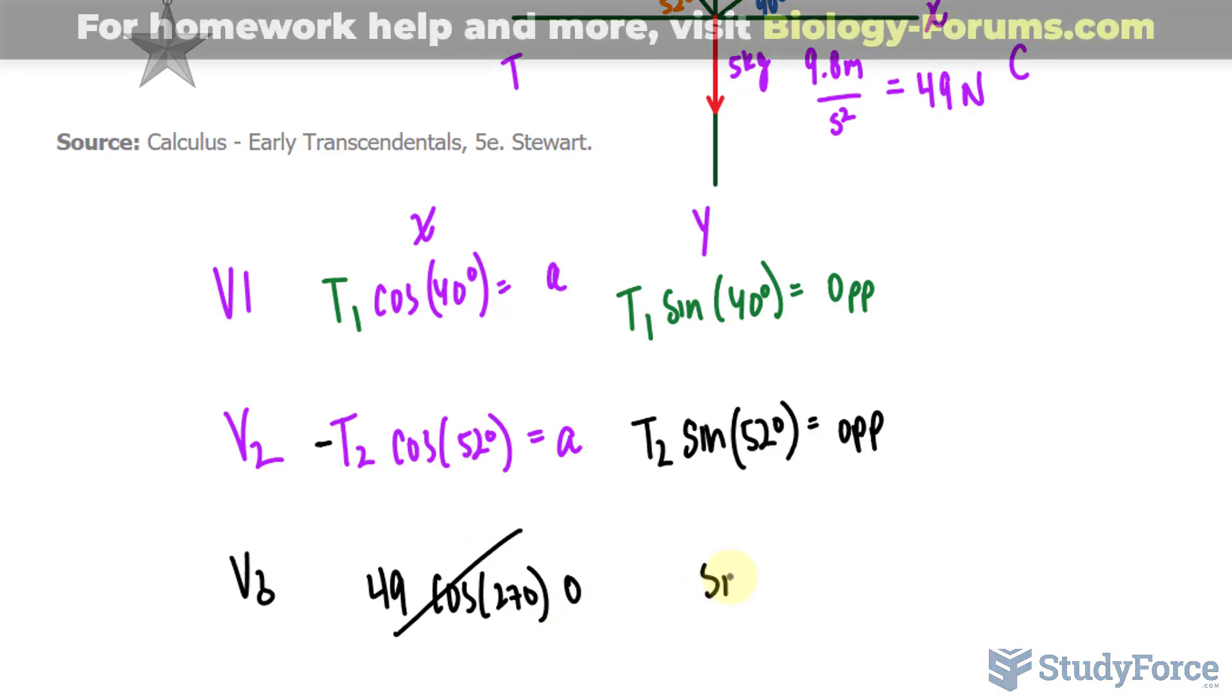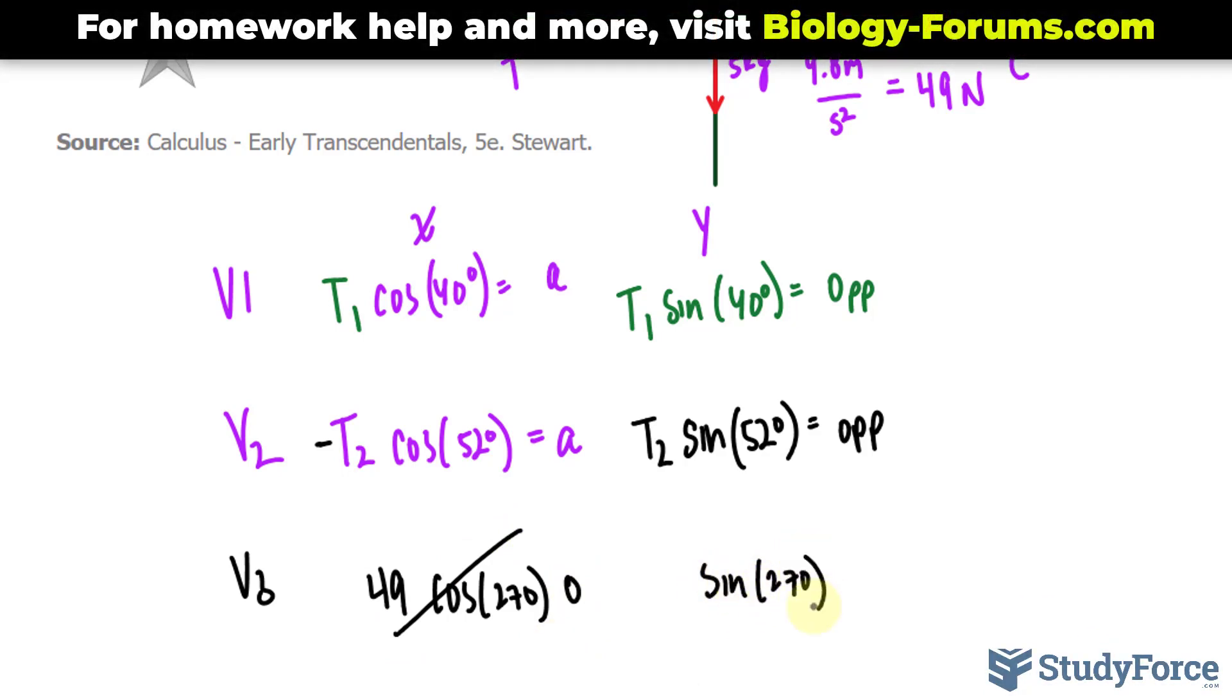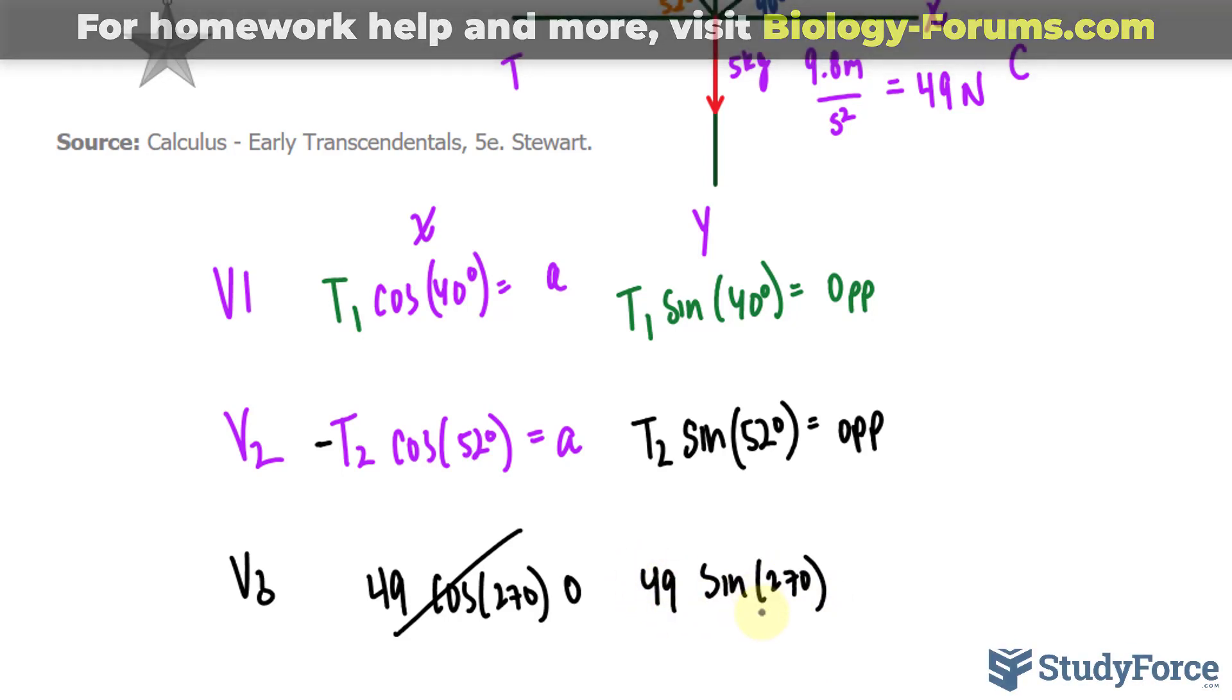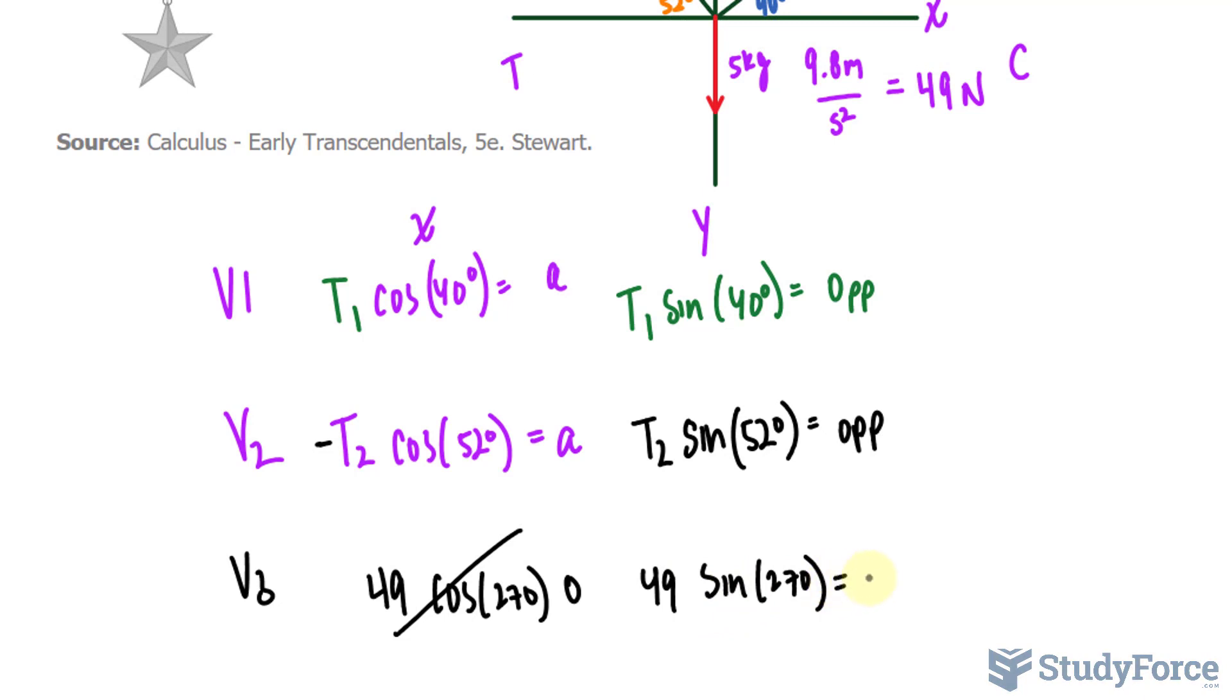For the y component, we'll use sine at 270. The tension is 49. Sine at 270 degrees is equal to negative 1. So the y component is negative 49.